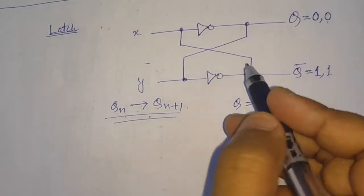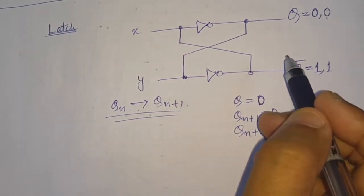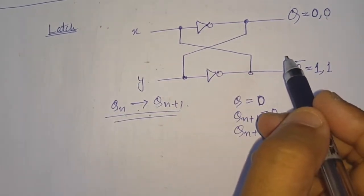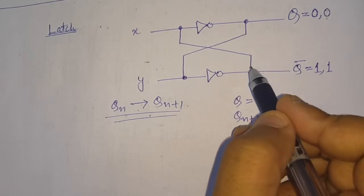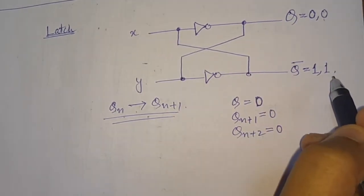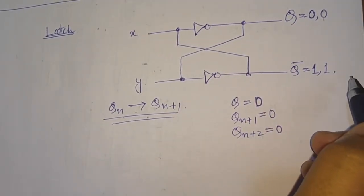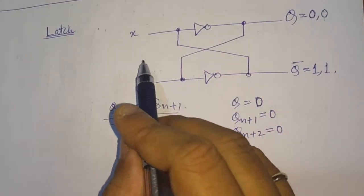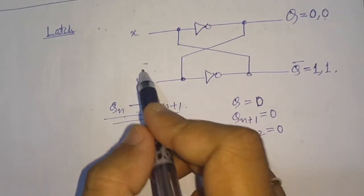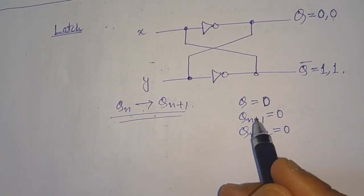Therefore we can say that a latch is a circuit that holds a single bit of information, or it is a single bit memory element that can hold the value or store 1-bit information indefinitely until it is disturbed by the input signal levels.